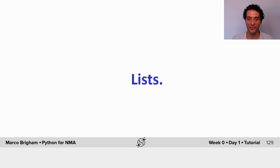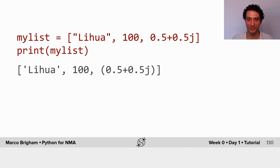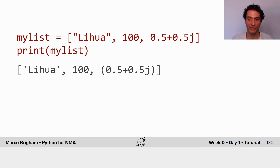Welcome back. Let's talk about lists. Lists are containers in Python where you can store many types of data. In this example we have a string, an integer, and a complex number.